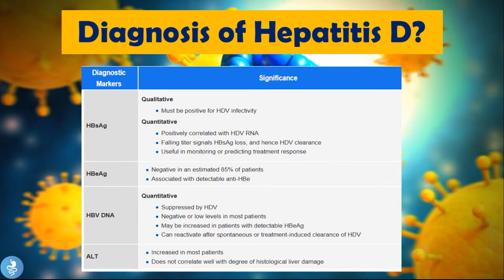We can also check the HBeAg — the hepatitis B envelope antigen — which is negative in about 85% of patients. HBV DNA levels will actually be suppressed by the hepatitis D virus, so negative or low levels are found in most patients; however, levels can be increased in patients with detectable HBeAg, and if these levels peak they can reactivate HBV due to spontaneous or treatment-induced clearance of HDV. ALT levels will be increased in most patients as a sign of liver inflammation.